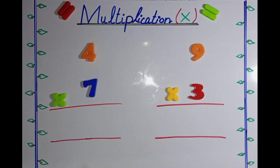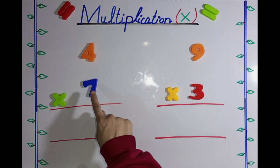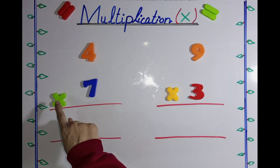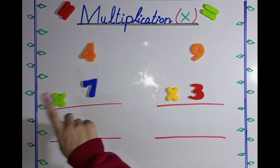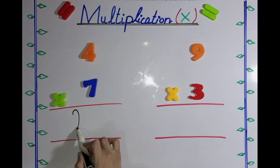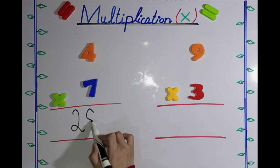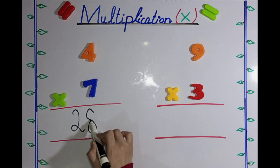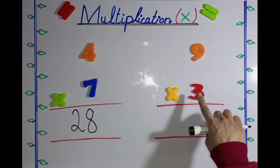Here, the first example is 7 multiply 4. 7 4s are 28. The answer is 28. Here the second example...